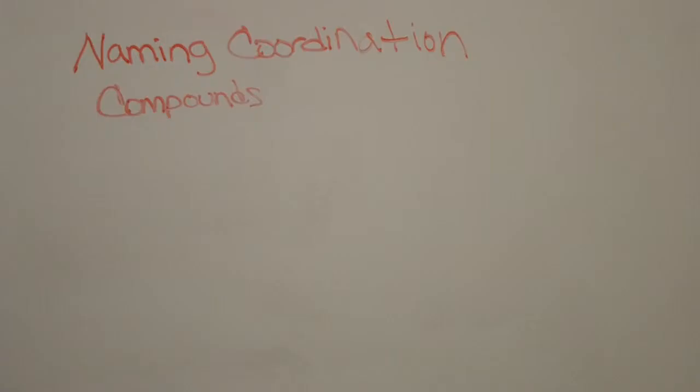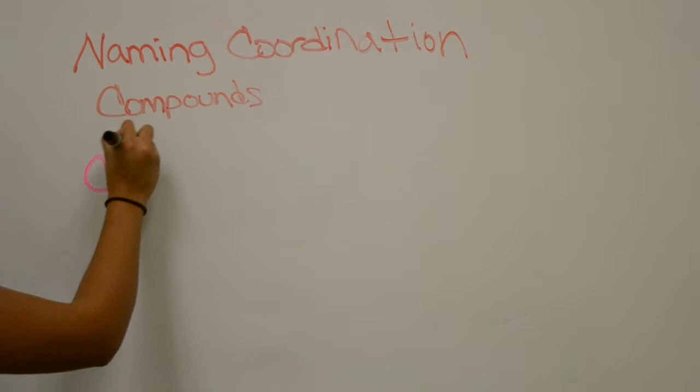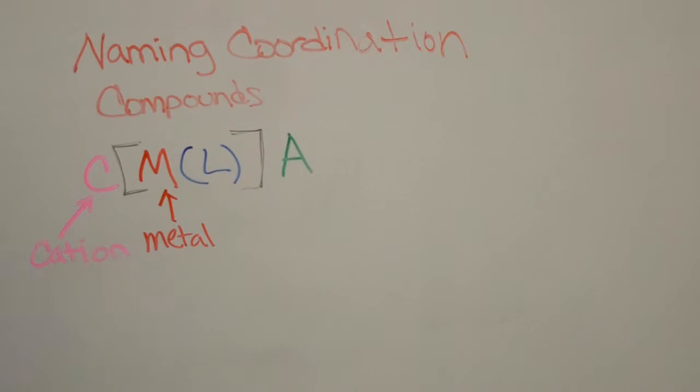Now let's get to naming the coordination compounds. Here is the formula used to represent these components: cation, metal, ligands, and anion.